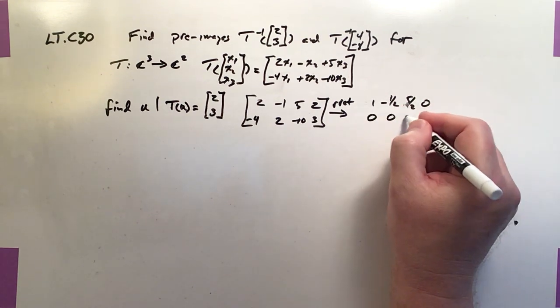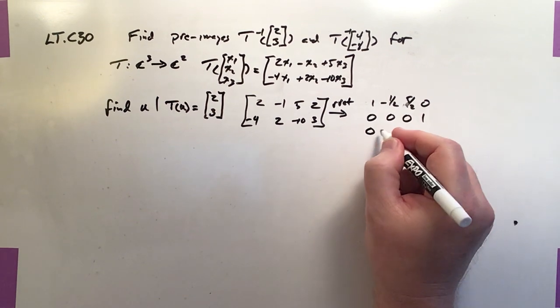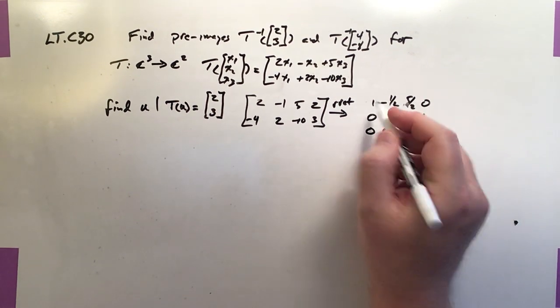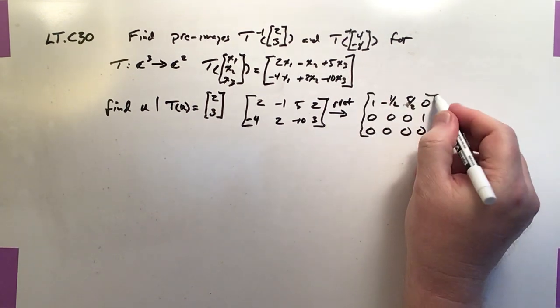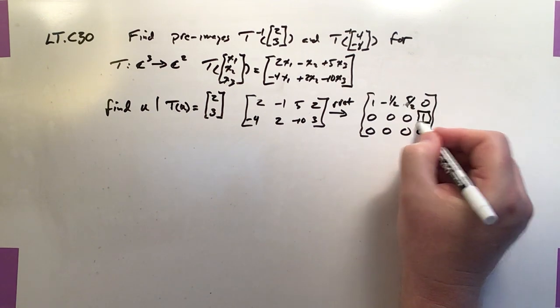But then the second line is a disaster: [0, 0, 0, 1], and the third line [0, 0, 0, 0]. And you can see we end up with a pivot row in n plus 1.